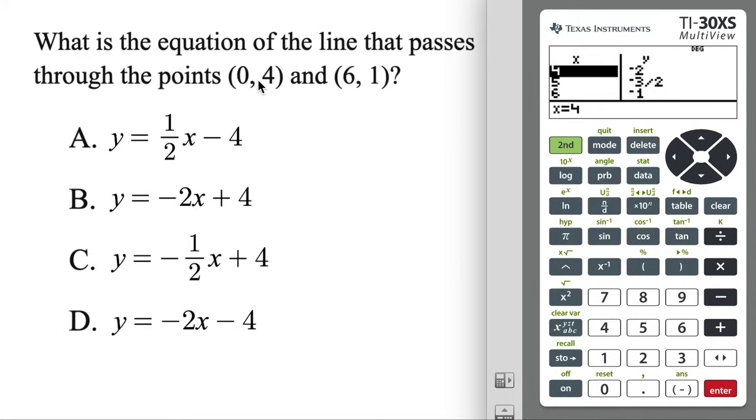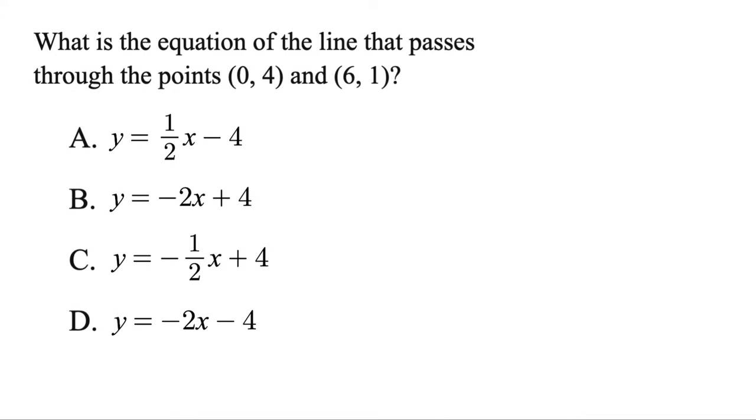Then we want to see if we go through this point first. 0 is X, 4 is Y, so notice that's the X column. We're just going to scroll up to X is 0, but when we do that, we get 0, negative 4. We want 0, positive 4, so unfortunately it's not A. So let's go ahead and get rid of that, and we're going to continue process of elimination until we find which one goes through both of those points.